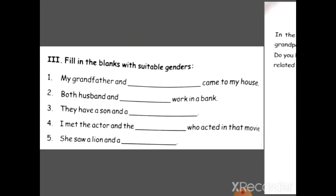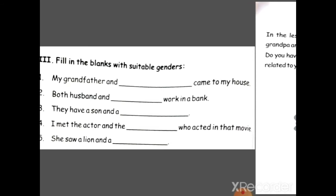Then the next exercise is: fill in the blanks with suitable genders. 'My grandfather and dash came to my house.' You can do it by yourself now. What's the gender of son? What's the gender of actor? And what's the gender of lion? We have already done these words.